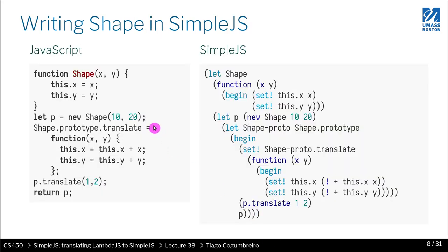Now I'm showing you code in JavaScript and how we would represent it in SimpleJS, and I want to highlight a few notable differences. The first one is the syntax, where you see the JavaScript syntax, and we're using an S-expression-based, parenthesis-based syntax, just so we can parse it using Racket.